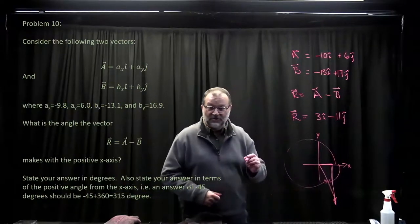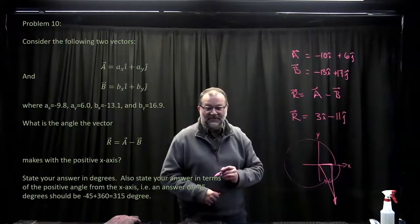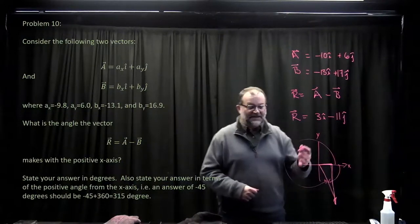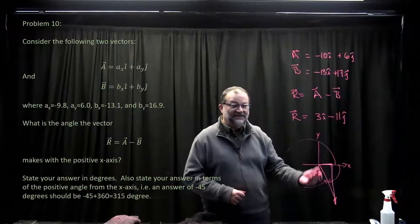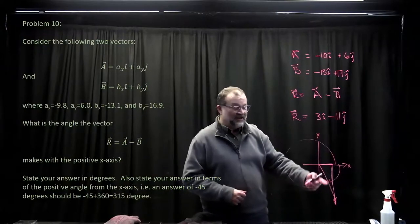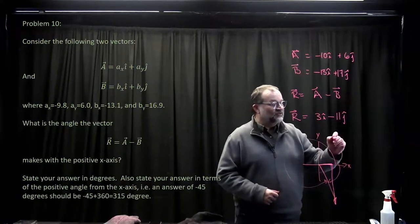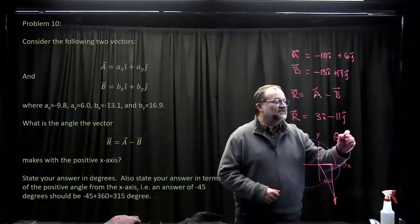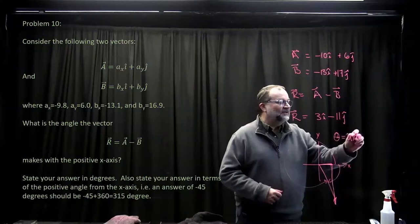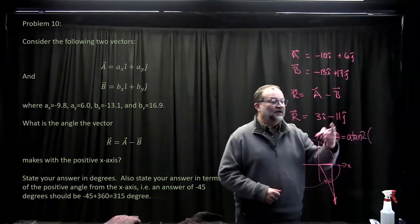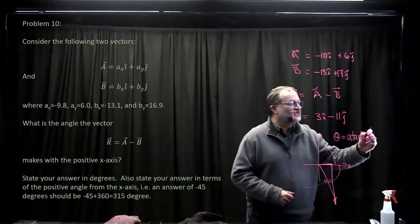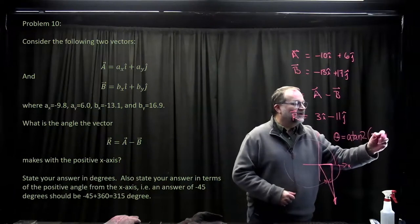The other thing you're going to want to do is this is the first instance we've hit where instead of using inverse tangent to get the answer, depending on where your vector ends up, you probably want to make sure that you use theta is atan2 of, in this case, your x, 3, and minus 11.